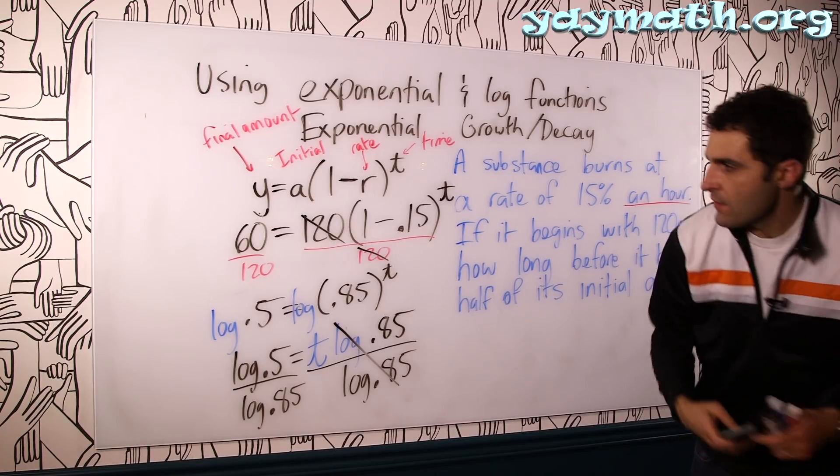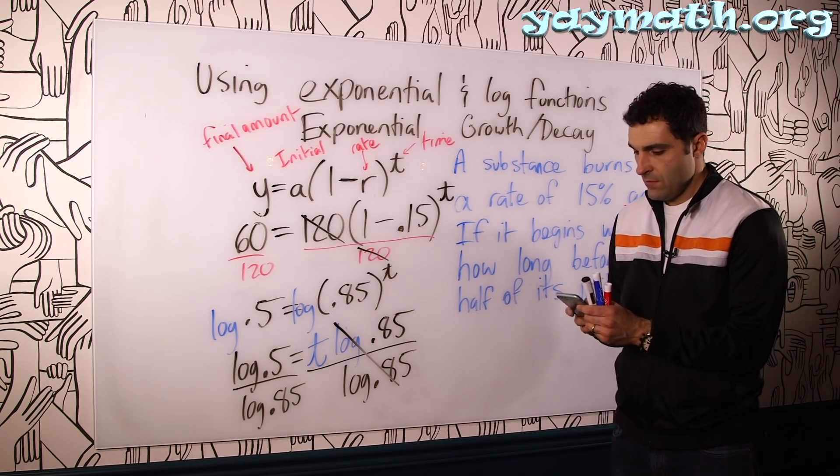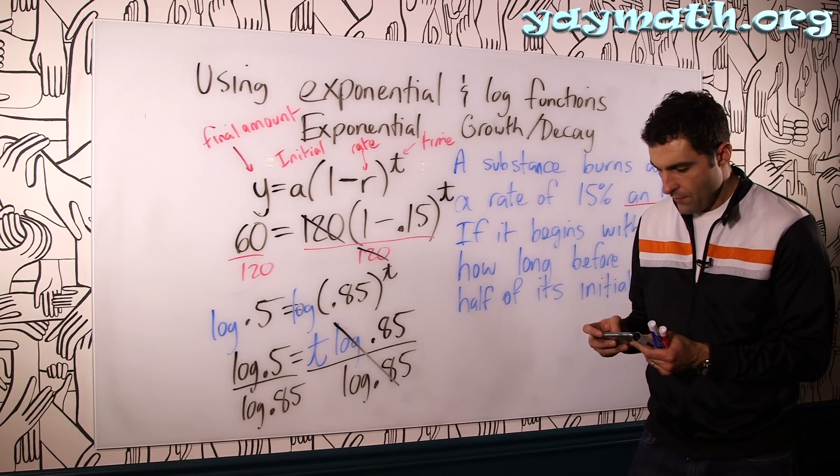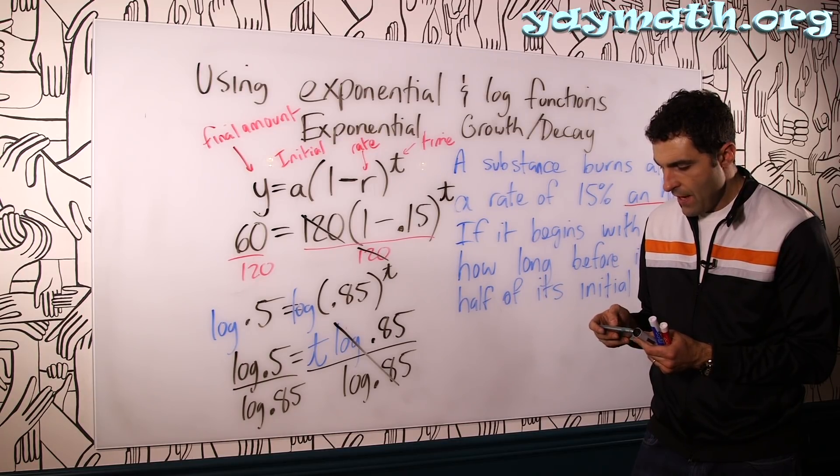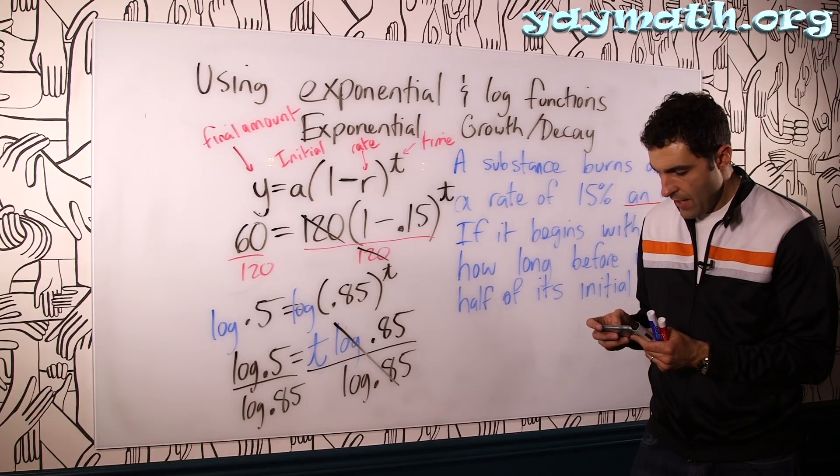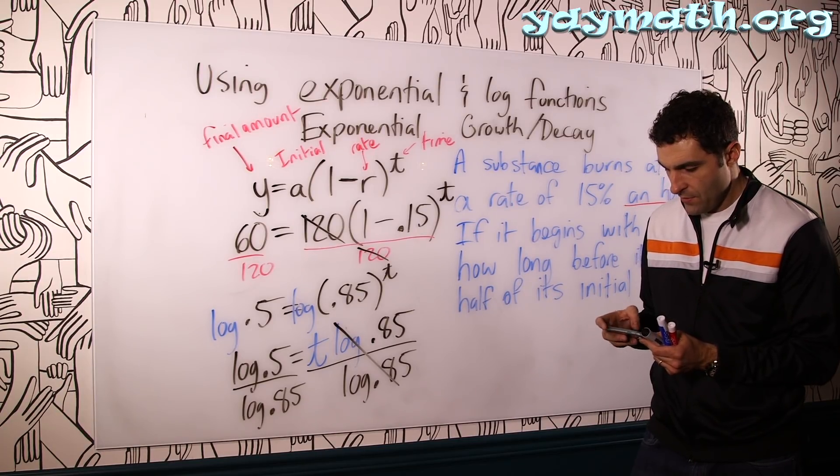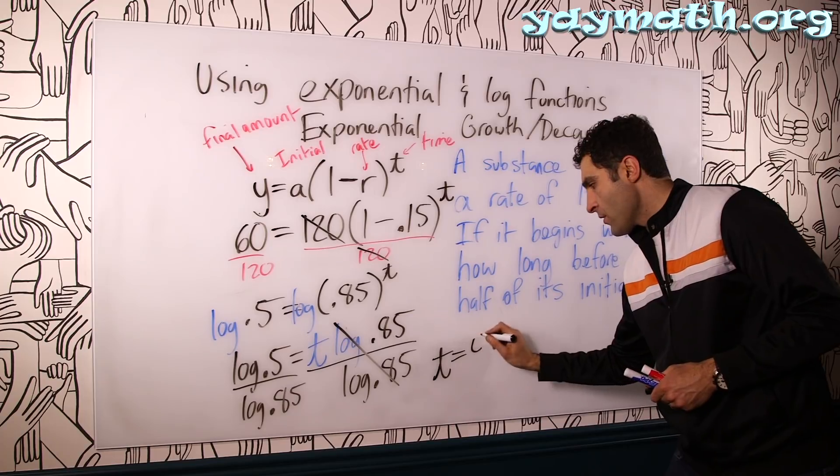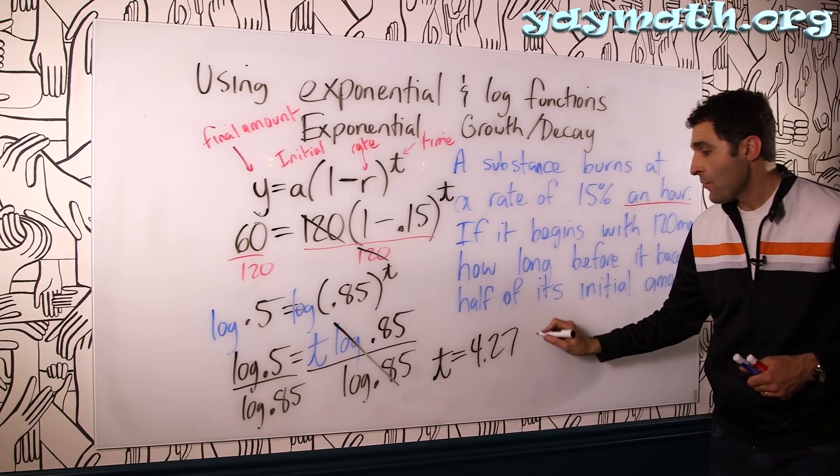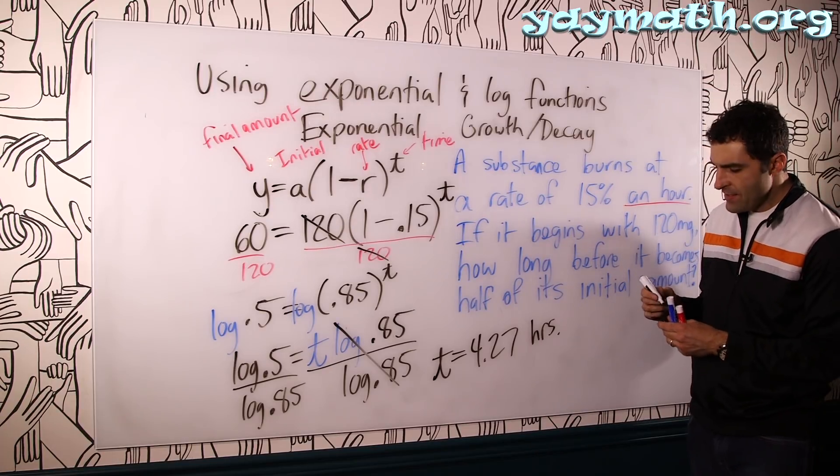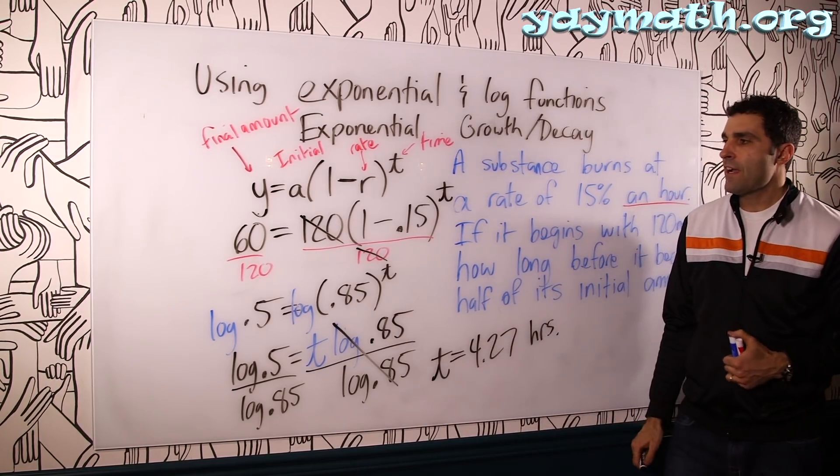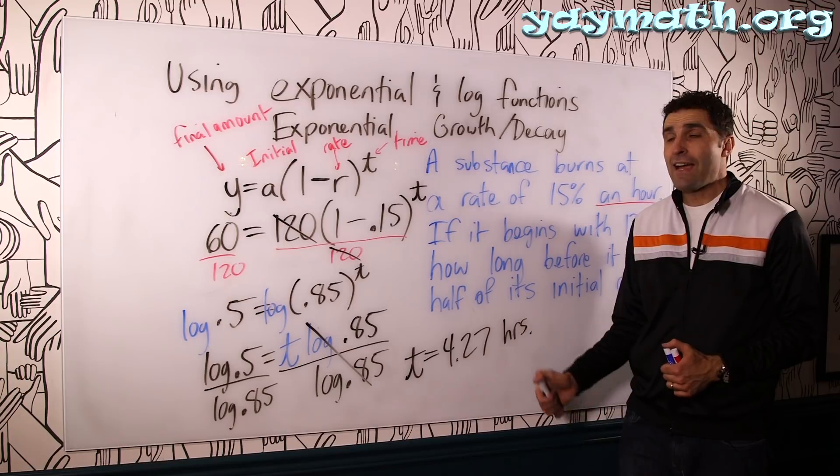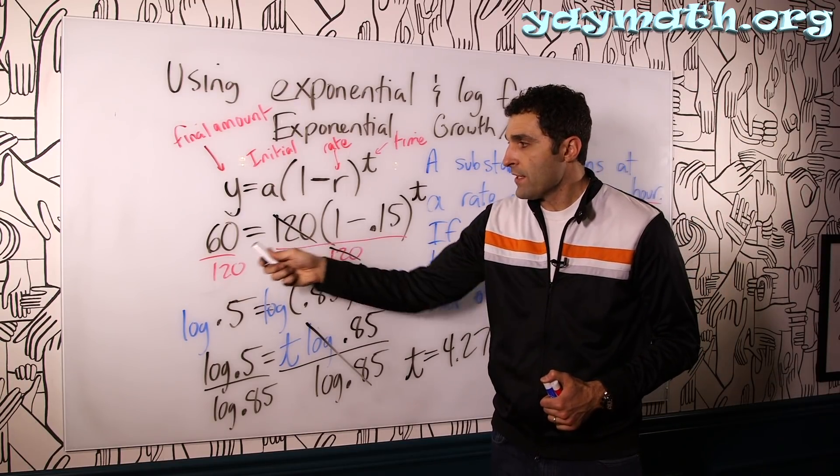And we should get our answer. Let's go see what happens. We'll do 0.5 log divided by 0.85 log equals 4.27. Time equals 4.27. In this case, hours. And it makes sense. In one hour, it goes down 15% of itself. Another hour, 15% of that. Another hour, 15% of that. After four hours, it probably went down 50% from 120 to 60.